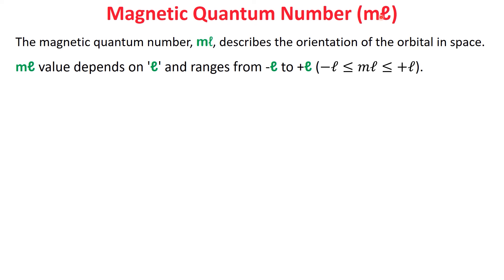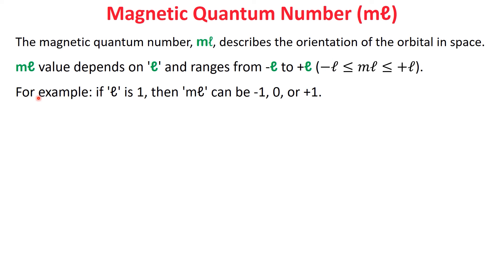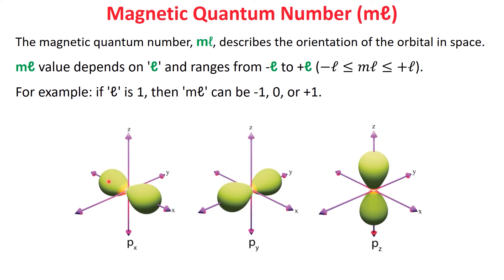The magnetic quantum number, ml, tells us the orientation of the orbital in space. Its value depends on l and can range from negative l to positive l. For example, if l is one, then ml can be negative one, zero, or positive one, representing the three different orientations of a p-orbital. These orientations lie along the x, y, and z-axes, allowing the electron to occupy different spatial directions within the atom.